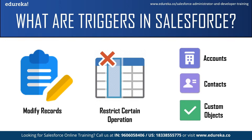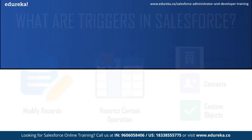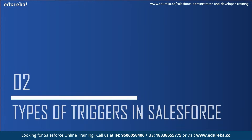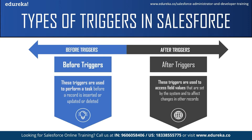Now let us move on to the types of Salesforce triggers. There are two types: the before trigger and the after trigger. Before triggers, as the name suggests, are used to perform a task before a record is inserted, updated, or deleted. These triggers are usually used to update or validate record values before they are saved to the database.